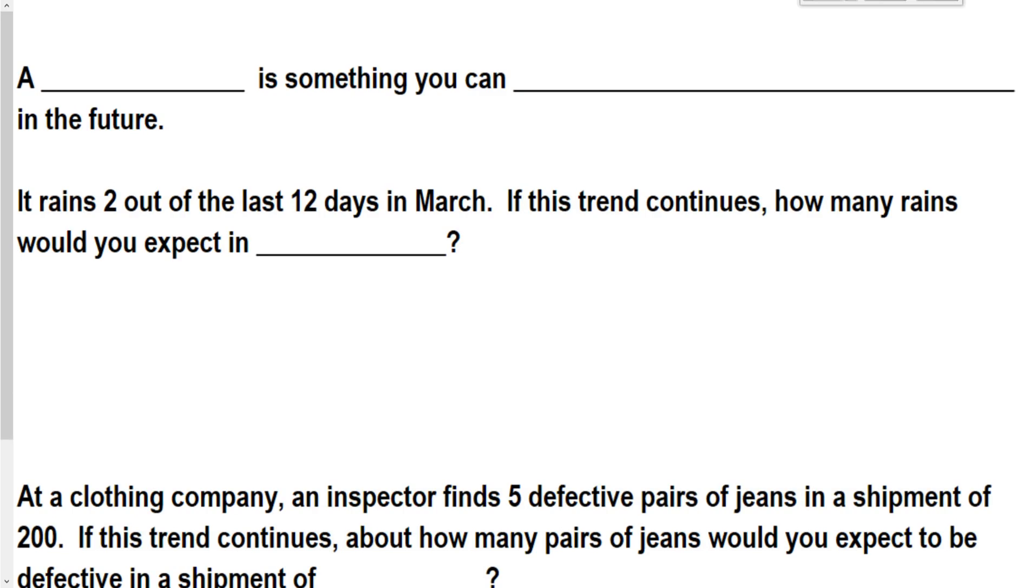How to make a prediction using experimental probability. So a prediction is something you can guess will happen in the future. That's just a general definition of what a prediction is, not really math related. But I can also use experimental probability to make a prediction about trends in the future.